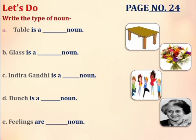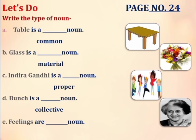A part: Table is a common noun. Glass is a material noun. Indira Gandhi — as it's the name of a particular person, it will be a proper noun. Bunch is a collective noun. And feelings are abstract noun, because we cannot see our feelings, we cannot touch our feelings. That's why they are abstract nouns. I hope this must be clear to you all.